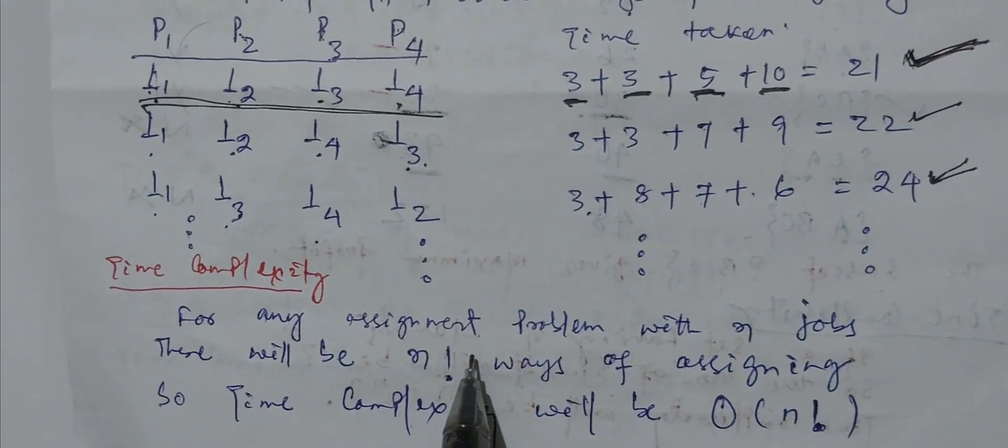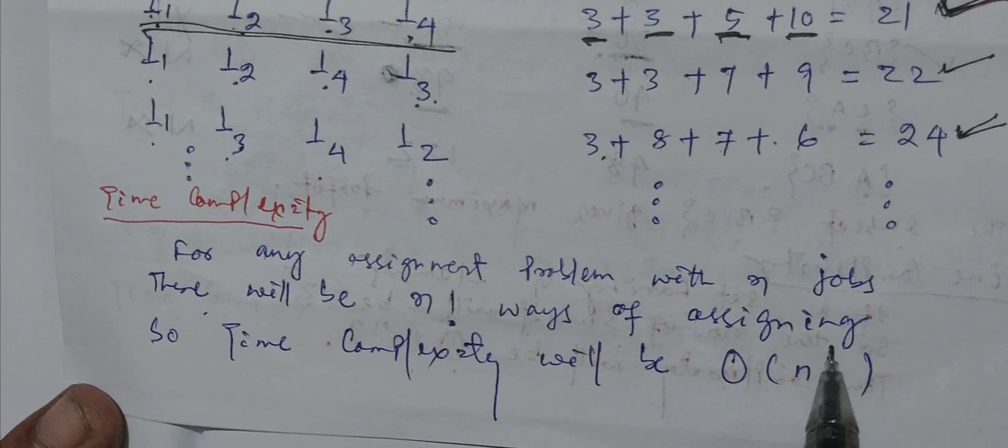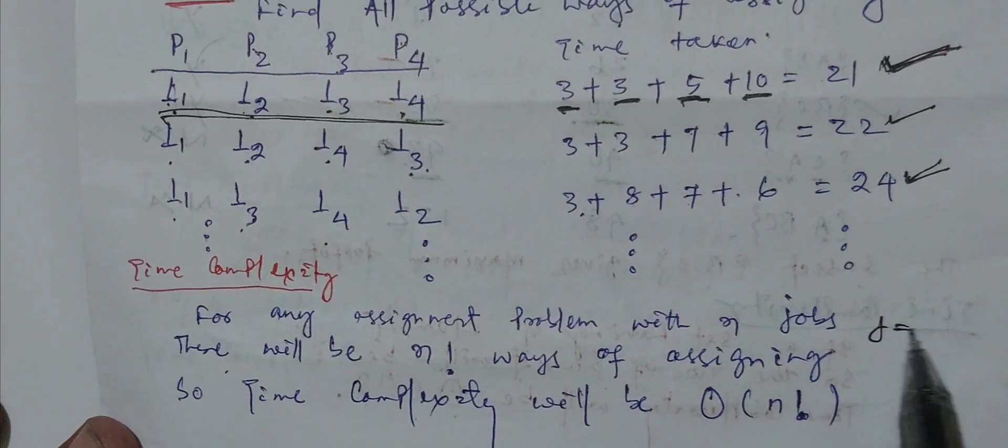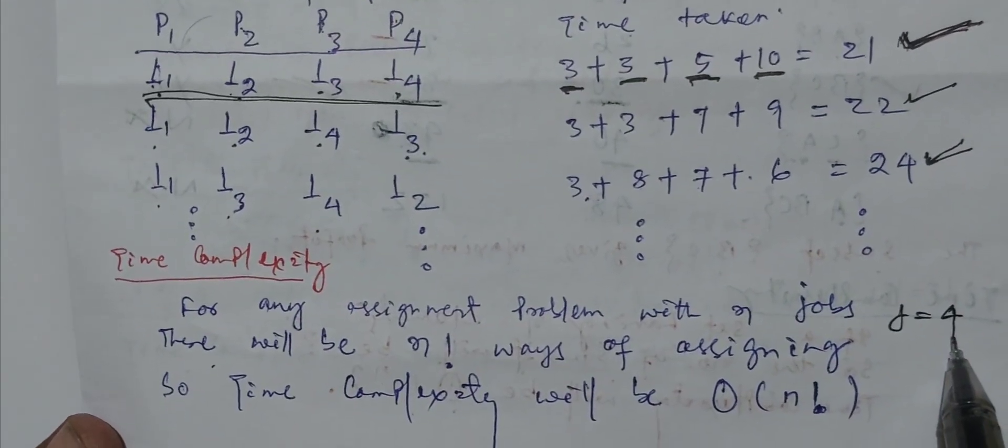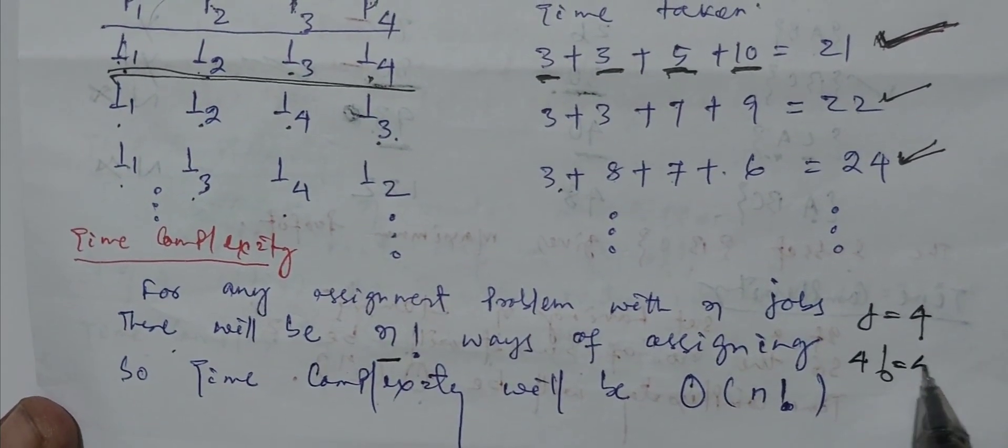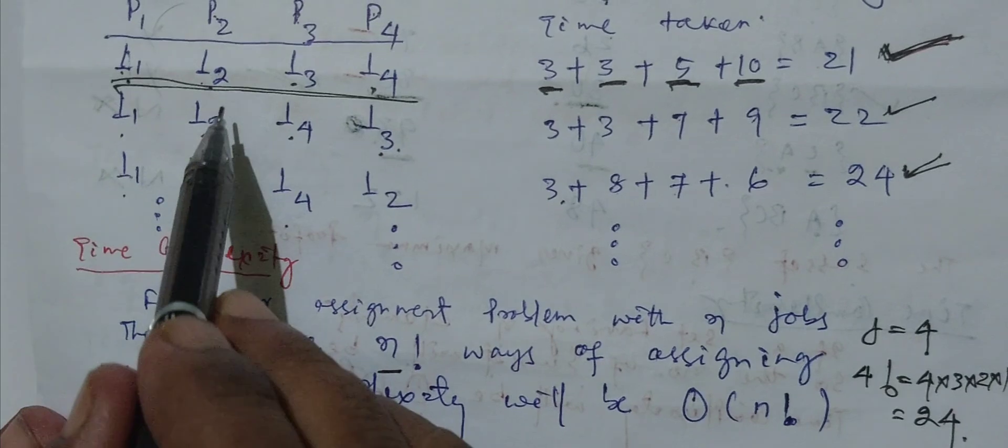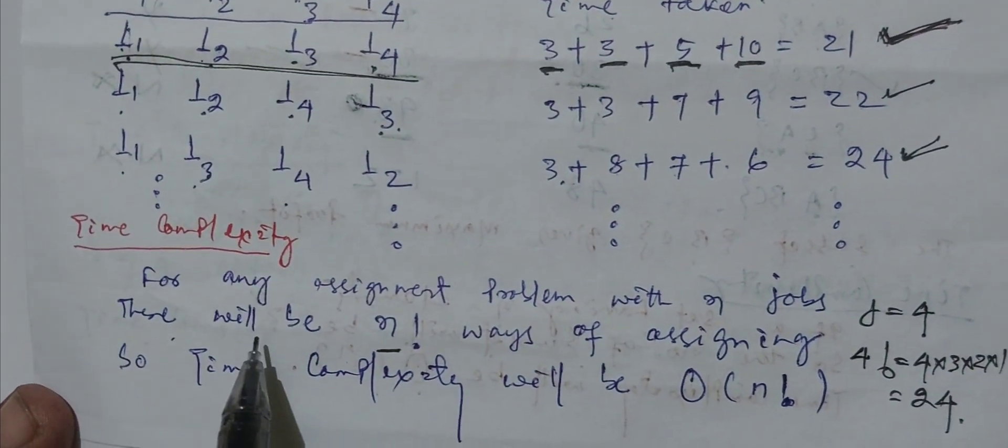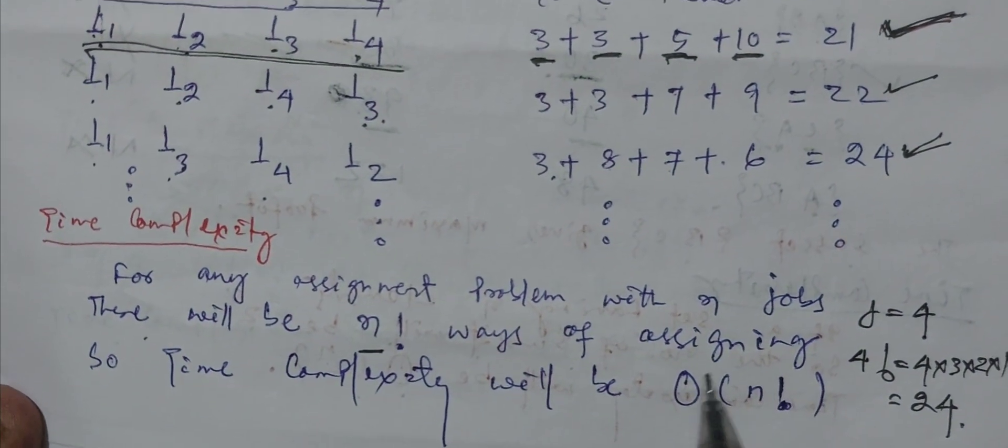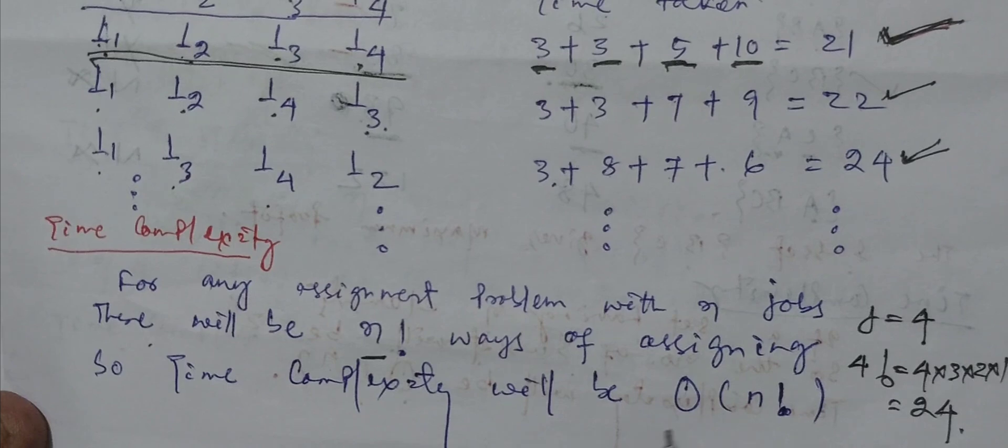So time complexity is telling, for any assignment problem with n jobs, there will be n factorial ways of assigning. Suppose in this question, job is 4, so my ways of assignment will be 4 factorial because of n factorial. 4 factorial equals 4 times 3 times 2 times 1, which is 24. Therefore this way, if we calculate, we will find 24 ways. Out of that, we will calculate which will be the minimum, that will be our answer. So n factorial is the ways of assigning if n jobs are there. So time complexity will be big O of n factorial.